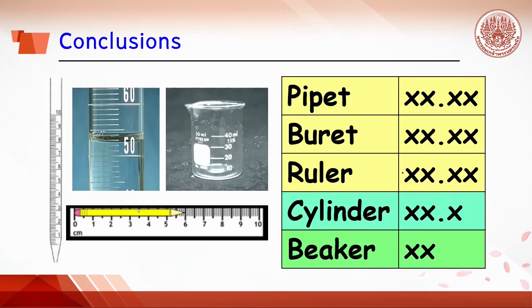This table summarizes the readings from each measuring device based on significant figure rules. We conclude that the burette and pipette give the most accurate readings with two decimal places, the cylinder gives less accurate readings with one decimal place, and the beaker is used only for approximate measurement.